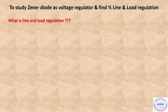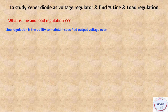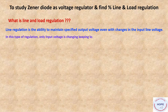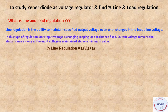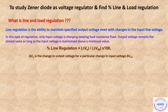Line regulation is the ability to maintain a specified output voltage even with changes in the input line voltage. In this type of regulation, only input voltage changes whereas load resistance is fixed. Output remains almost the same as long as the input voltage is maintained above a certain minimum value. Mathematically it equals delta V₀ divided by delta V_in, multiplied by 100, where delta V₀ is the change in output voltage for a particular change in input voltage delta V_in.